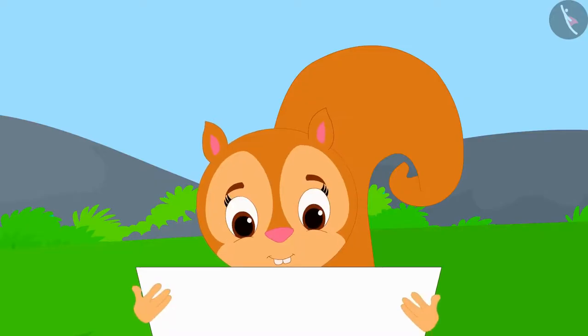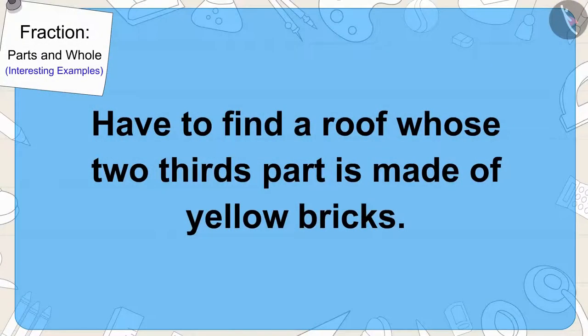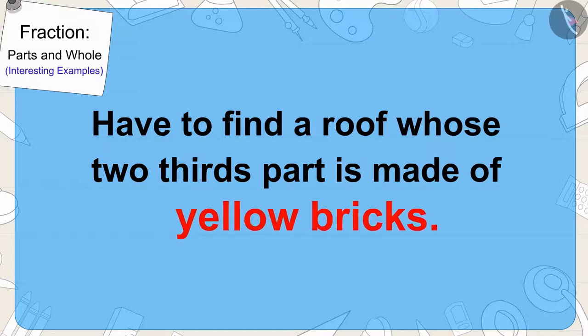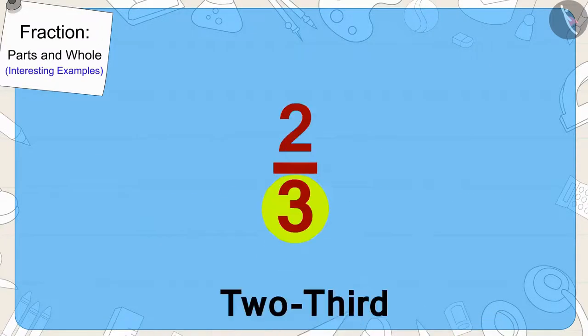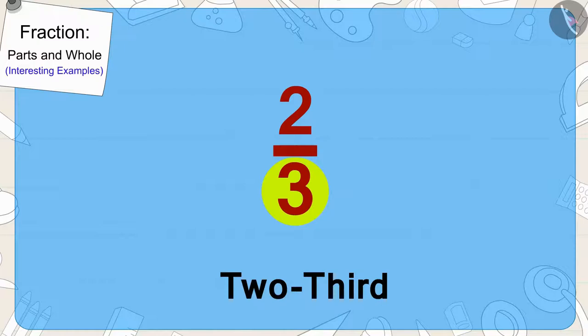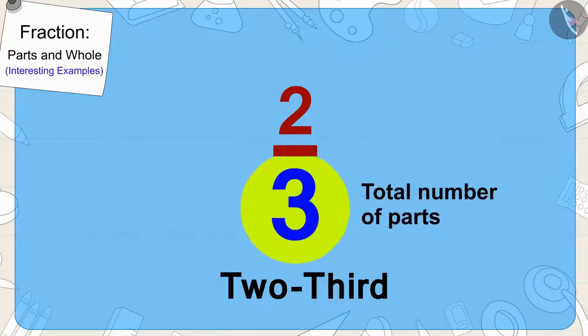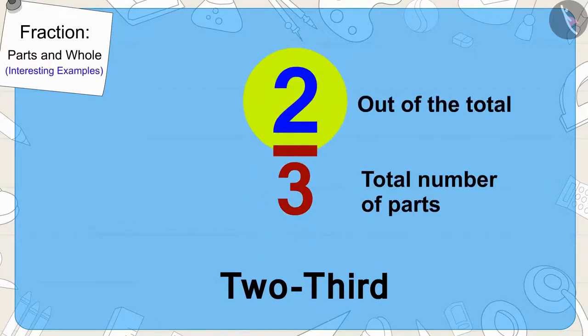It was written in that clue that she would have to find a roof whose two-thirds part is made of yellow bricks. Children, can you tell what kind of roof will it be? Yes, it will be a roof which is divided into three equal parts and two parts of it would be made of yellow bricks.